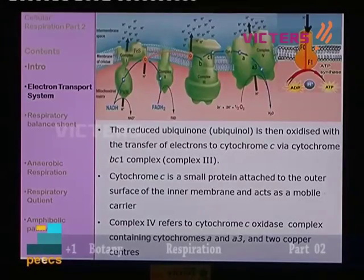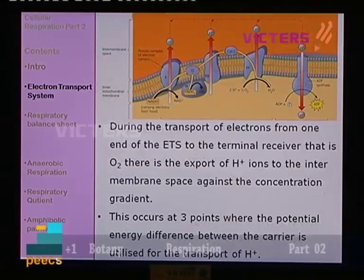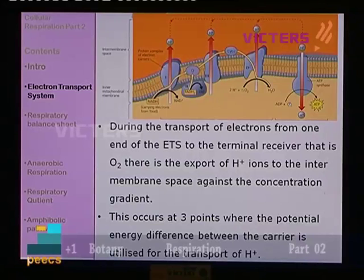Cytochrome A3 is referred to as the terminal oxidizing agent, because it gives electrons to the final electron-accepting agent — that is, oxygen. The electrons are finally transferred to oxygen via A3. During the transport of electrons from one end of the electron transfer system to the terminal receiver — oxygen — there is the export of hydrogen, which is also very important.